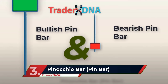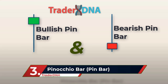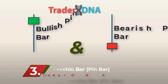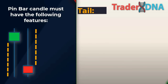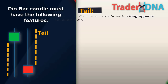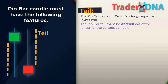Third: Pinocchio Bar or Pin Bar. A pin bar pattern consists of one price bar, typically a candlestick, which represents a sharp reversal and rejection of price. Key features include: the tail (also known as wick or shadow) — the pin bar must have a long upper or lower tail showing strong rejection; the tail must be at least two-thirds of the length of the candlestick bar. Longer tails indicate a more significant reversal. Long-tailed pin bars tend to have a higher probability than their shorter-tailed counterparts.